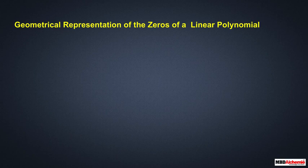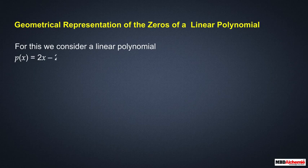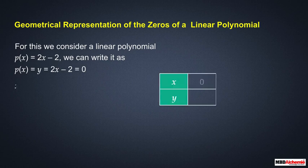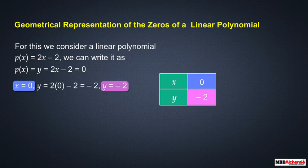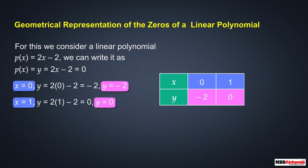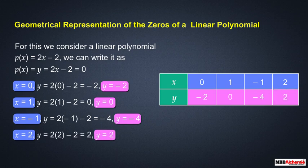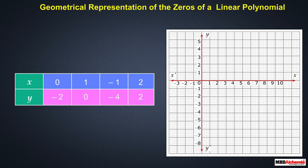First, we see the geometrical representation of the zeros of a linear polynomial. We consider p(x) = 2x − 2, written as y = 2x − 2. We tabulate values of y for different values of x: when x = 0, y = −2; when x = 1, y = 0; when x = −1, y = −4; when x = 2, y = 2. Now we plot the graph of these values.